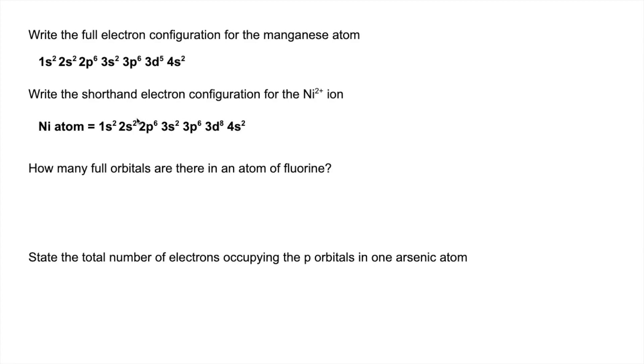And to get at the shorthand, all of this up to and including 3p6 is shortened to argon. So we would write argon in square brackets 3d8.